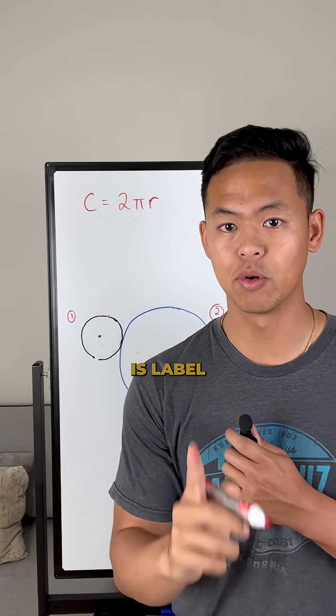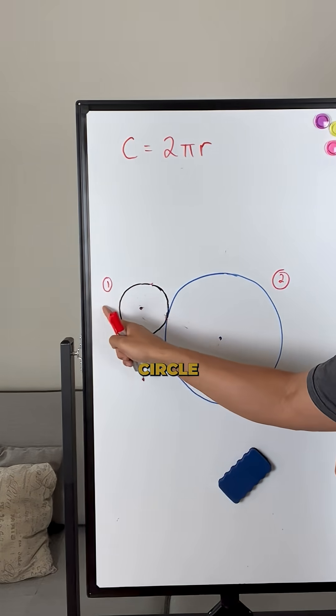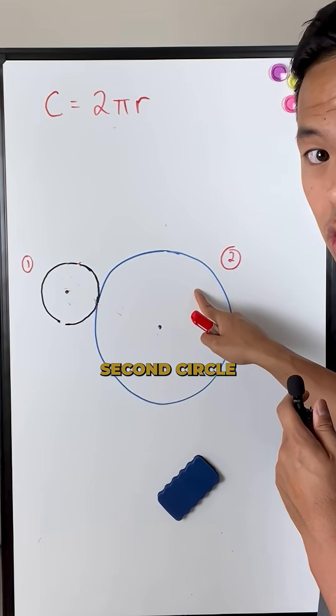The second thing you want to do is label your diagram accurately. Because we have two circles, I'm going to call the smaller circle circle one, and I'm going to call the second circle circle two.